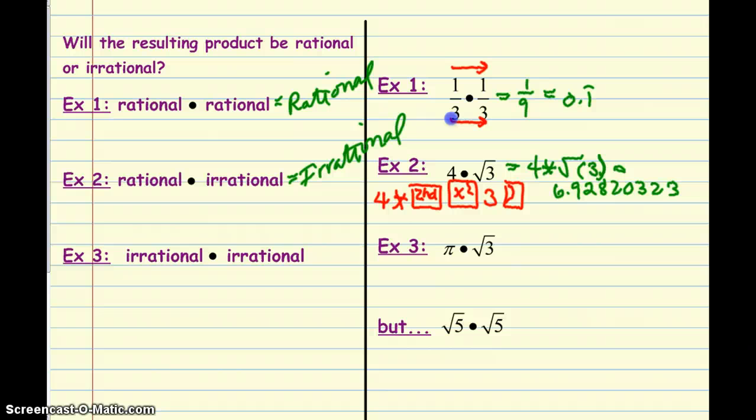So let's take a look at this last example when we have two irrational numbers. The first one is pi times the square root of three. So just like I had you do up in example two, enter that into your calculator. Your display should look something like this. So I've got pi times square root of three. And then go ahead and hit enter. And what do you get there? Here we get 5.441398093. Again, just like the one before, this one goes on and on and on. So this is irrational.